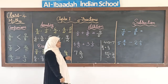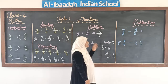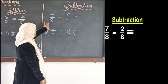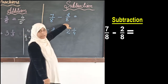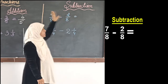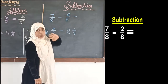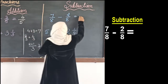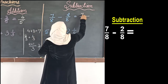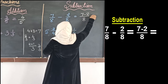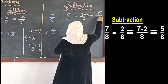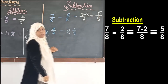Now we look at subtraction of like fractions. For 7/8 minus 2/8, the denominators remain the same, so we only subtract the numerators. The denominator stays 8, and 7 minus 2 equals 5, so the answer is 5/8.